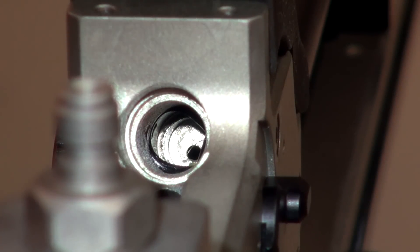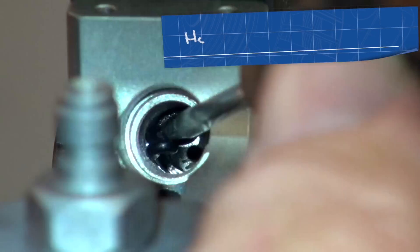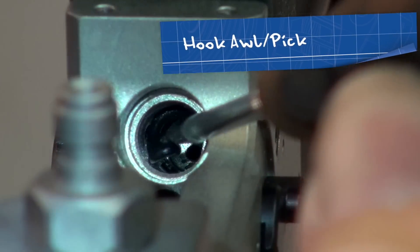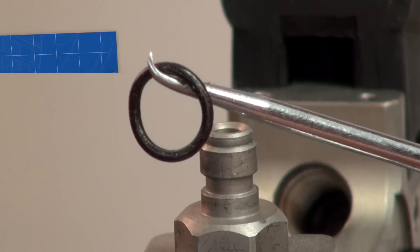So, the next thing I do is I go in with a little hook type awl. I get behind the O-ring and I just pull it out. This is a 9 by 1.5 millimeter O-ring. That's 70 durometer.